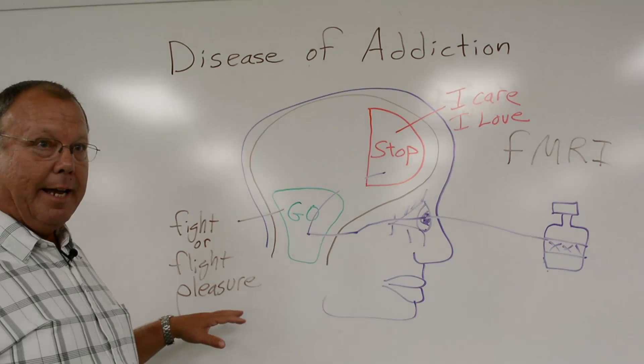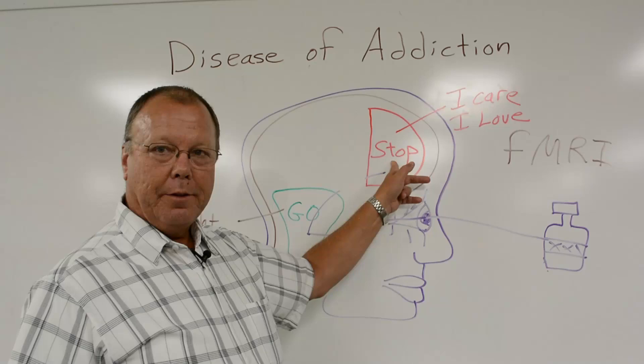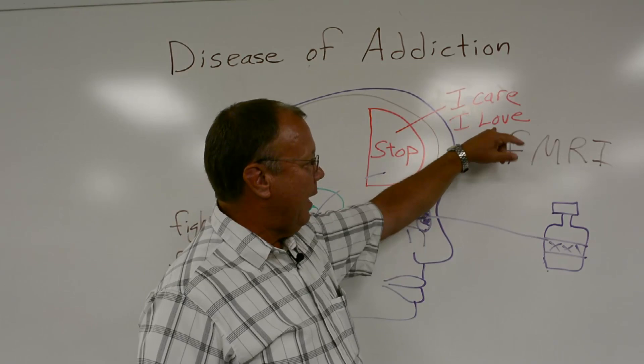The front part of our brain, up in the frontal cortex, handles higher-level functioning — where we stop and think about things. What are the consequences of my behaviors? Also, what happens up here are thoughts of caring and love.